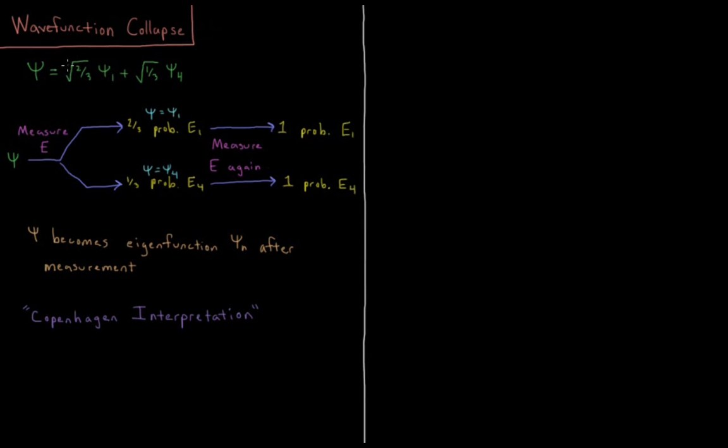So my coefficients here, if I square them and sum them, I have square root of 2 thirds squared is 2 thirds, square root of 1 third squared is 1 third, 2 thirds plus 1 third equals 1. So if my individual wave functions are normalized, my total wave function is normalized, because the sum of my psi star psi is going to be equal to 1.